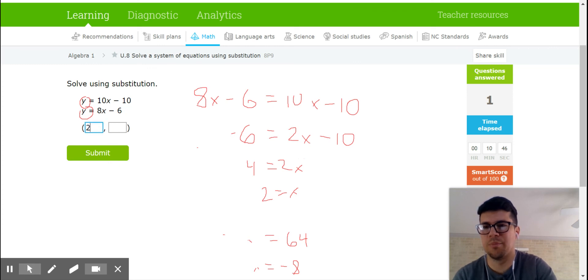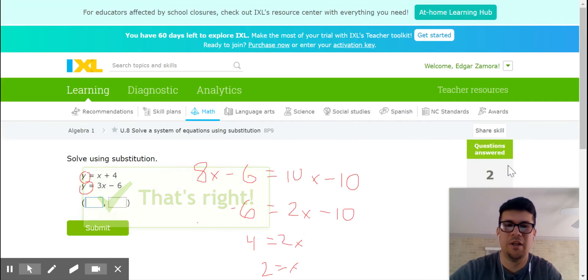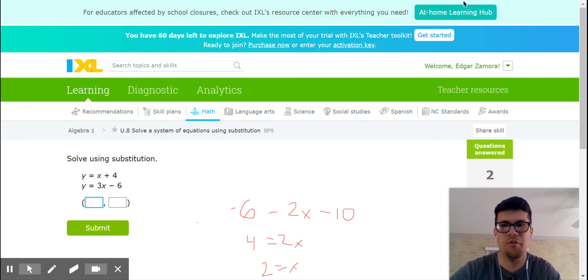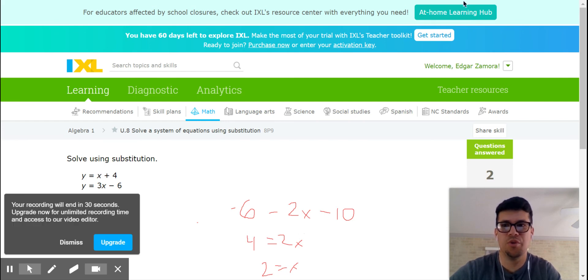And now it's really just like the previous problem. I can take my x of 2, substitute it into either of these and I should get the same y value. So I'm going to do both of them just to check it out. 10 times 2 is 20 minus 10 is 10, so my y should be 10. I can try it in my second one: 8 times 2, 16 minus 6 equals 10. I'm going to submit, I feel very good about that.